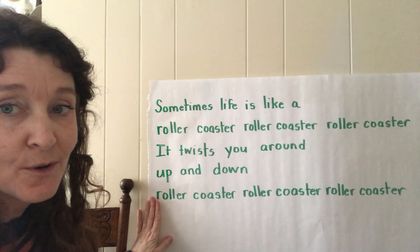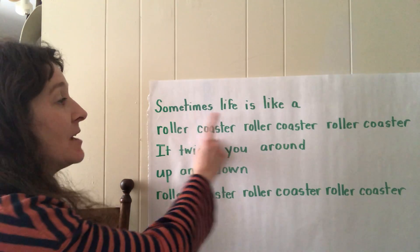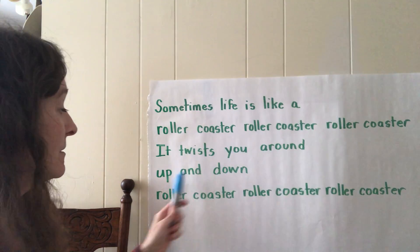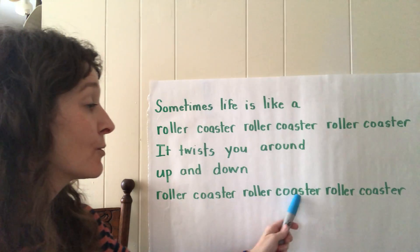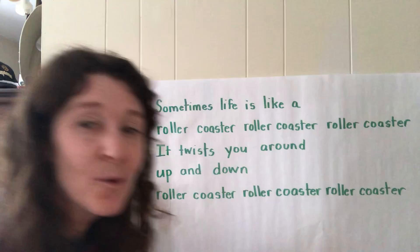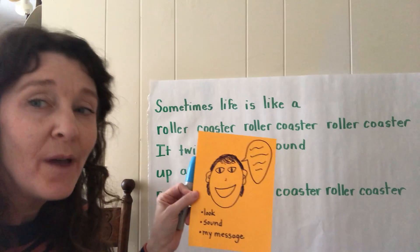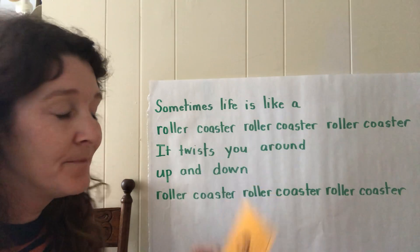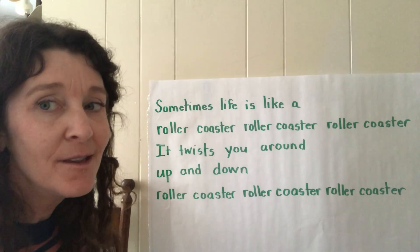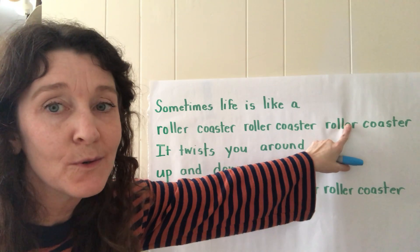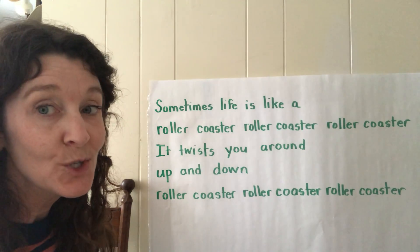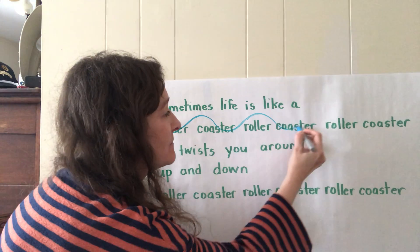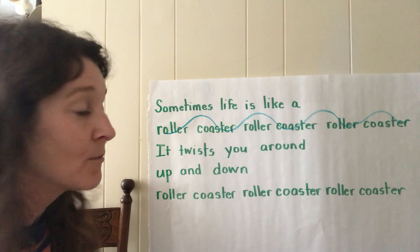This poem is about a roller coaster, kind of like life. 'Sometimes life is like a roller coaster, roller coaster, roller coaster. It twists you around, up and down, roller coaster, roller coaster, roller coaster.' As I'm reading this, I want to think: does it look the way I want it to look? How do I want my reader to read it, and what's my message? I'm definitely thinking about this part — when I repeat 'roller coaster' — I think I want the words to look like an up and down roller coaster.